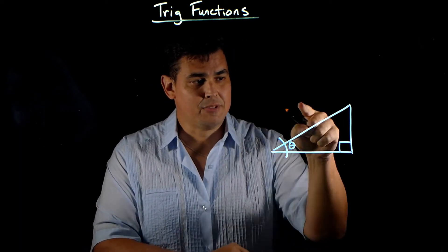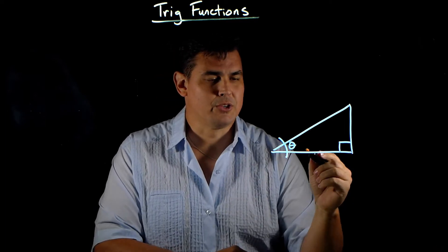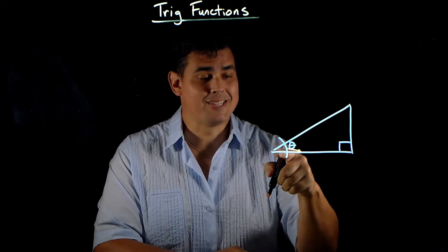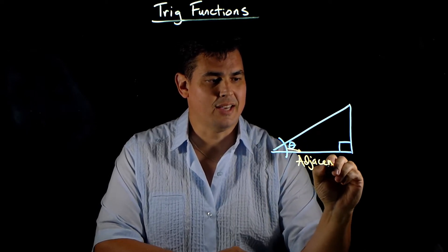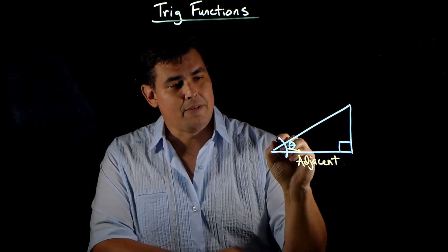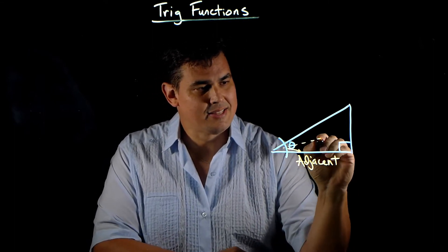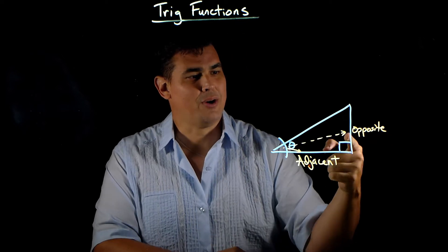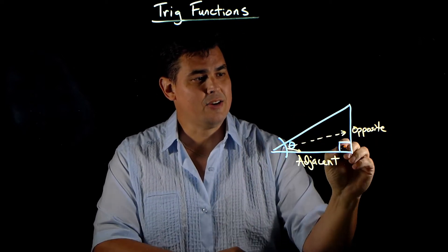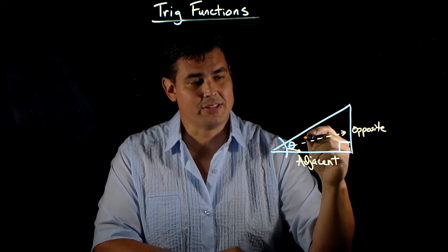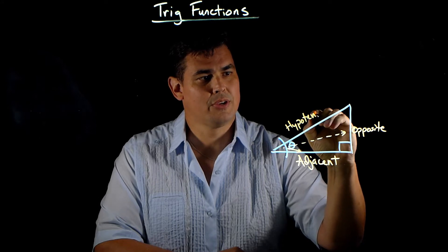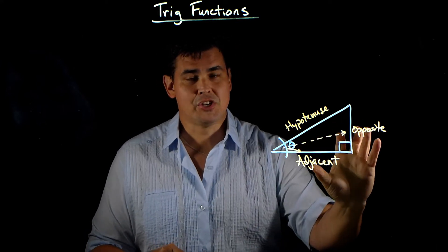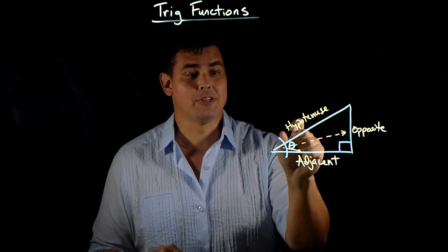For the sides of the triangle, we need to define them so we can use these trig functions. The side that's touching the angle is the adjacent side, because adjacent means next to. The side that's opposite from it, the one that doesn't touch it, is obviously the opposite side. And this side that's opposite the 90 degrees — the long side — is always called the hypotenuse. The opposite and adjacent can change depending on where you define the angle.